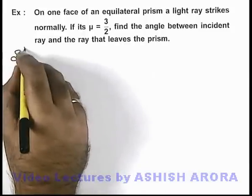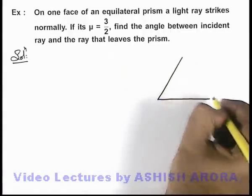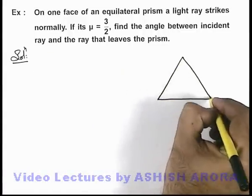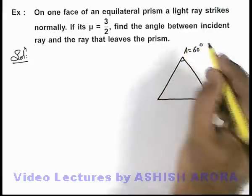Let us first draw the situation. This is an equilateral prism where the prism angle is 60 degrees.